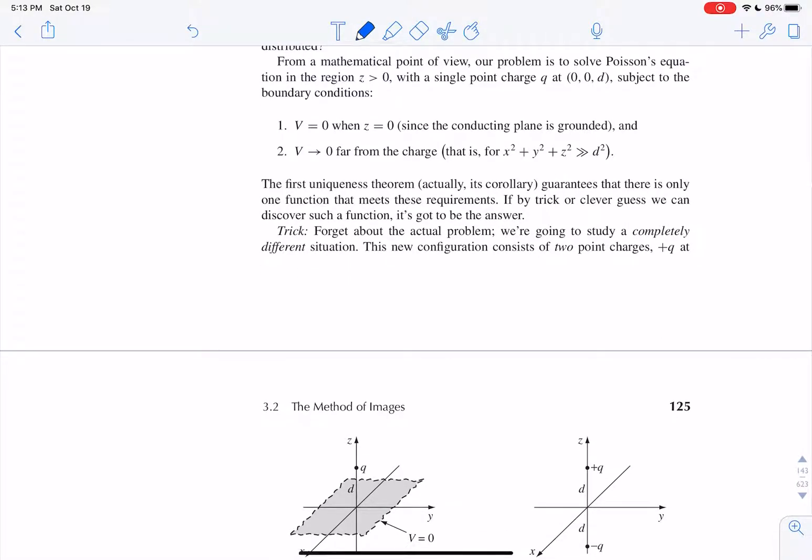And these two things, we can actually get the answer by doing kind of a special thing. Because of the first uniqueness theorem, if we can specify the boundary conditions, then we can figure out the potential in that region if we understand the boundary. So what we can actually do is create a problem that has the same boundary conditions but is a completely different charge configuration.